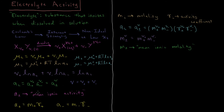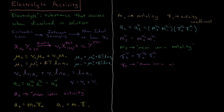In the same way, since activities are defined in terms of molality, we define a mean ionic activity coefficient γ± such that γ±^ν equals γ+^ν+ times γ−^ν−, where γ± is the mean ionic activity coefficient.